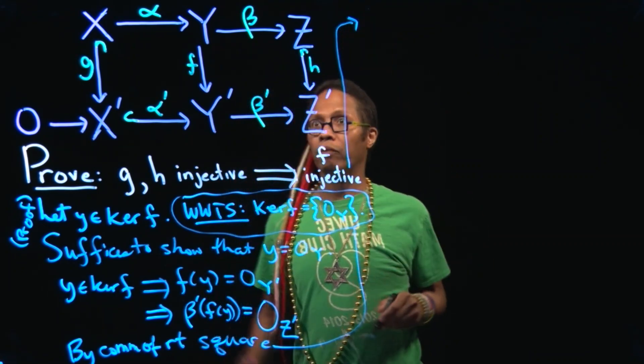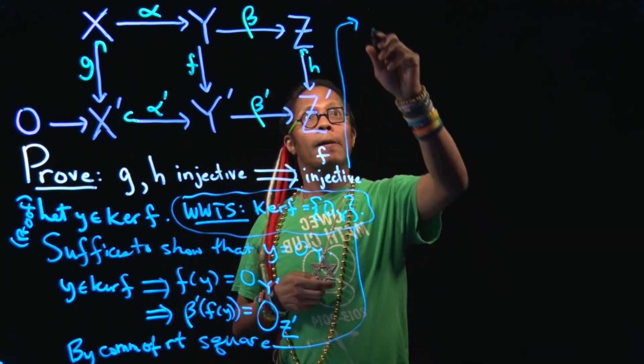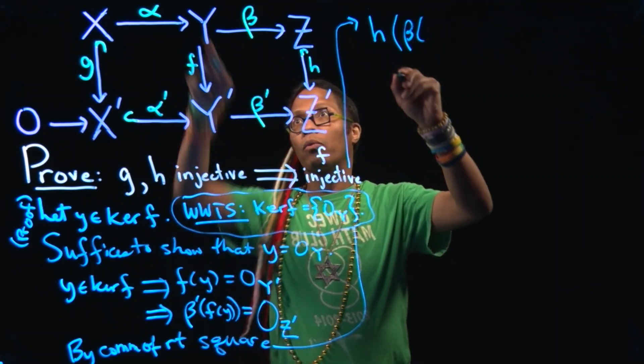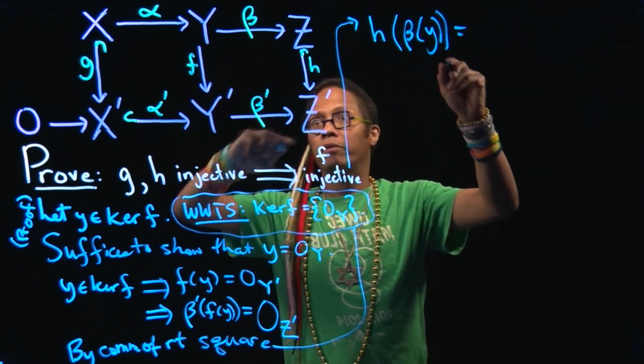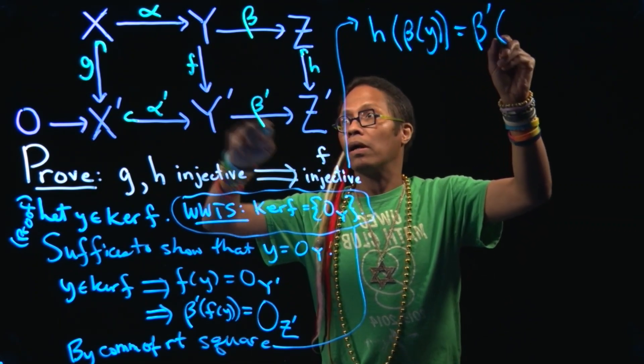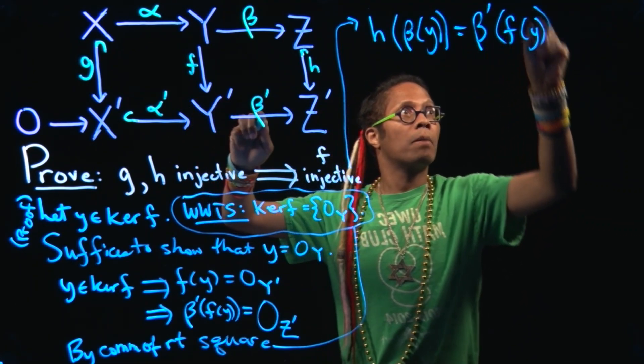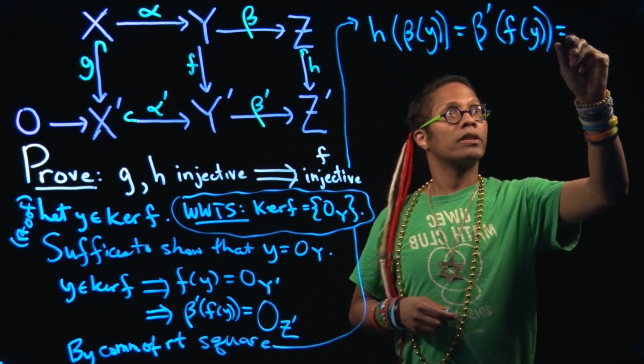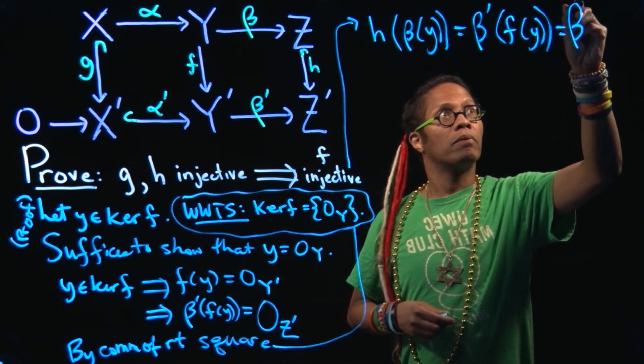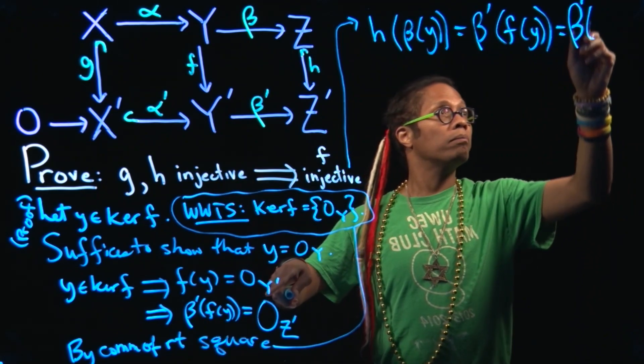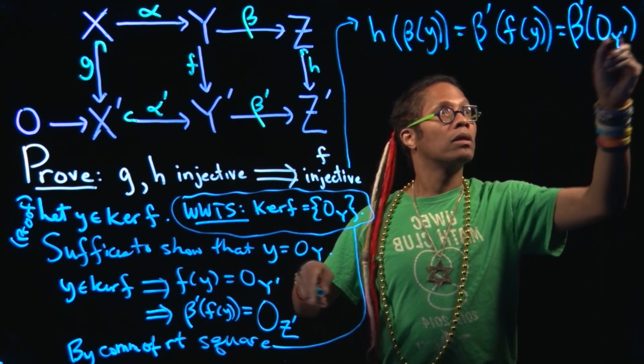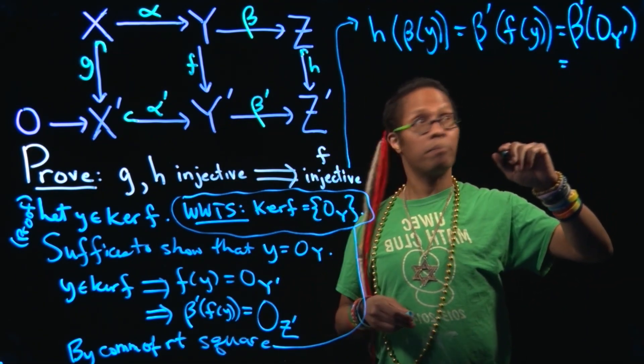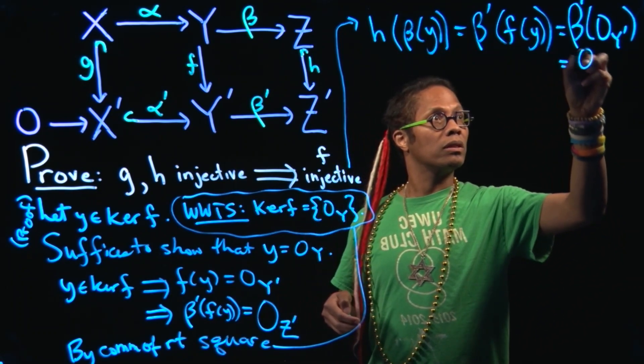By commutativity of the right square we all know then that if we travel from H of beta of the Y that's here, that's the same as traveling from beta prime of F of the Y. But we just learned that Y is in the kernel of F so this is really just beta prime of 0 sub Y prime. But beta is a homomorphism. So this is just the 0 in Z prime. Or actually 0 in Z prime.